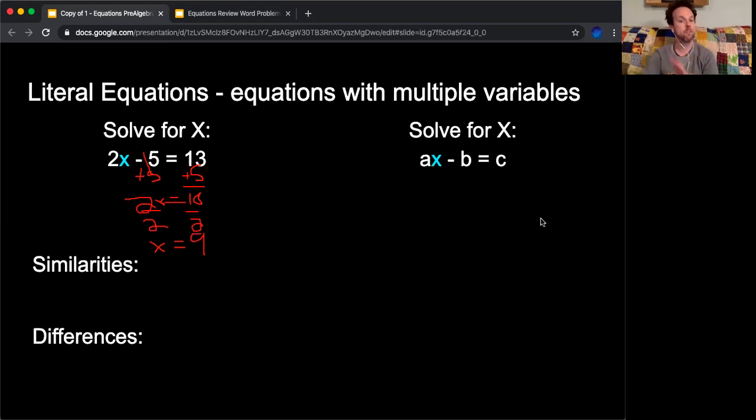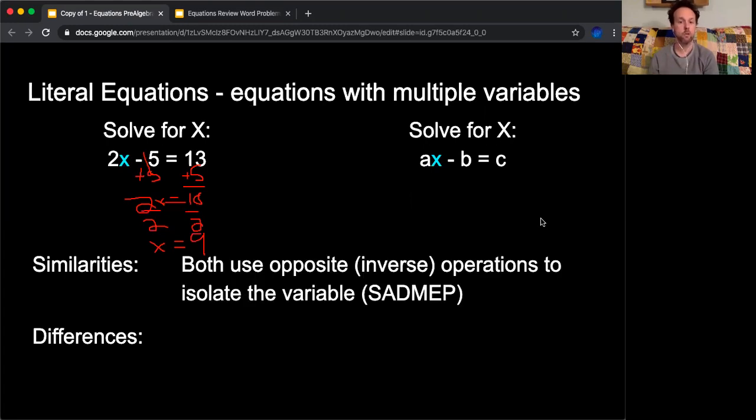With literal equations, they have some similarities with typical equations. For instance, they both use inverse operations to isolate the variable. Remember, inverse operations, we're using the opposite. So I start out with a negative 5 on one side, I add positive 5 to both sides. I'm multiplying x by 2 in order to isolate that variable to get the x by itself. I'm going to do the inverse. I divide both sides by 2. So with a literal equation, I'm doing the same thing. I'm following those same operations.